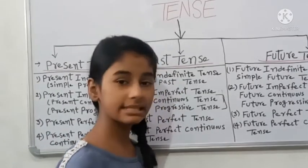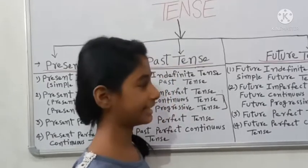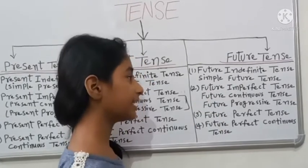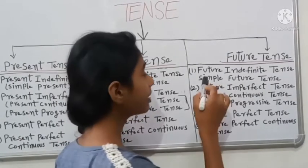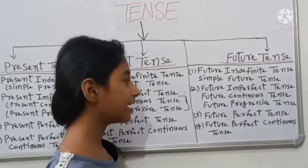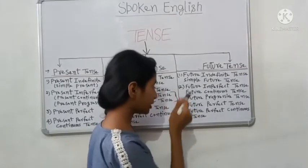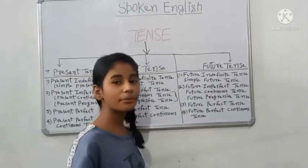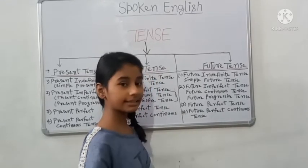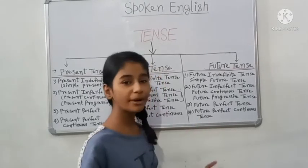Now Future Tense. First is Future Indefinite Tense, also called Simple Future Tense. Second is Future Imperfect Tense. Third is Future Continuous Tense, also called Future Progressive Tense. And the fourth is Future Perfect Tense, and lastly Future Perfect Continuous Tense.